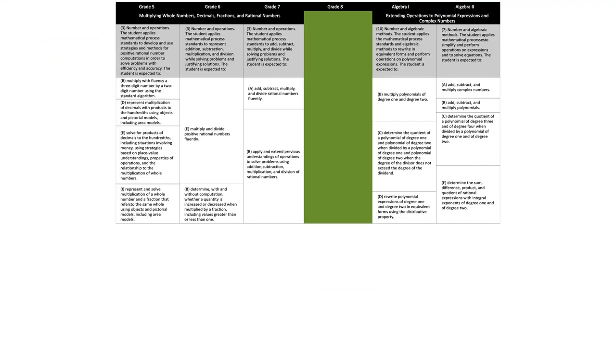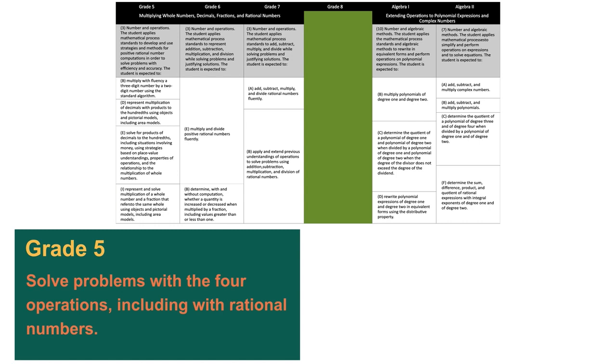Students learned to multiply with fluency in 5th grade. This started with multiplication of a 3-digit number by a 2-digit number using the standard algorithm. It continued with multiplication of decimals, including money, and multiplication of fractions by a whole number. Multiplication was done with a variety of strategies and models, such as understanding place value, properties of operations, and area models.